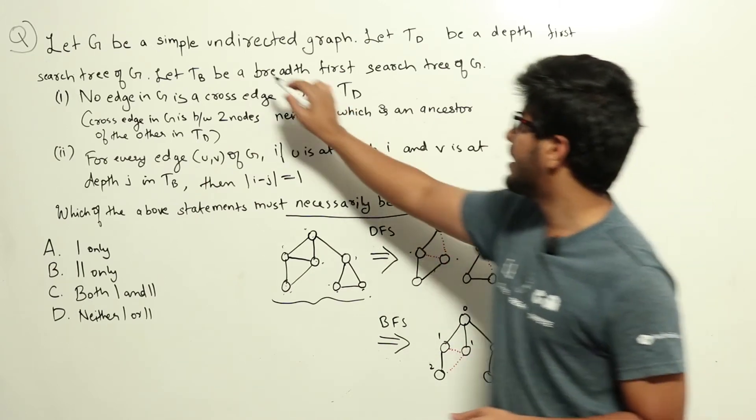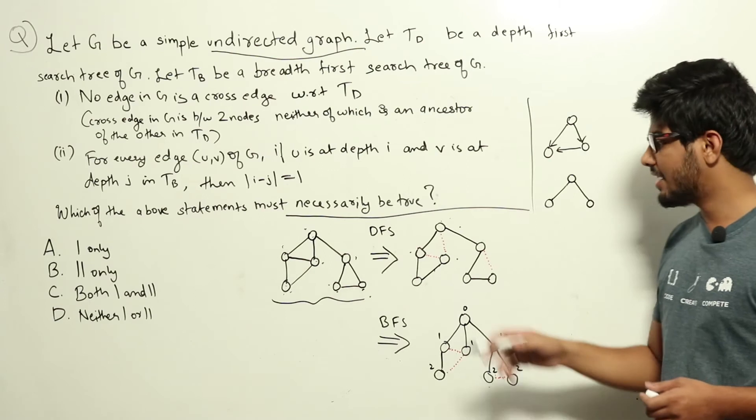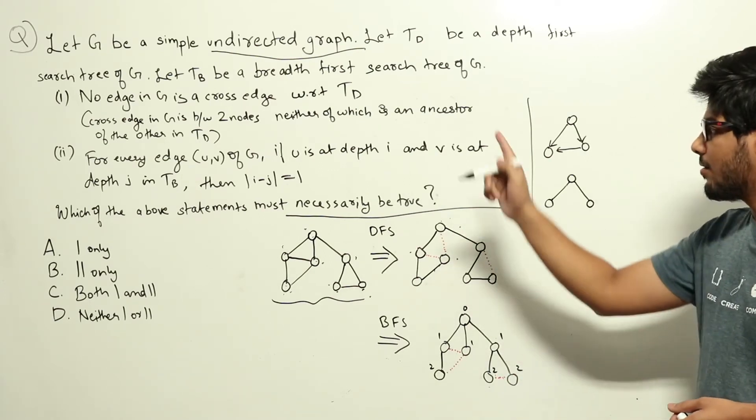You can try out more examples and see that a cross edge will never happen. So statement 1 is true.